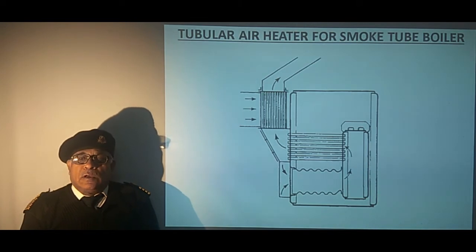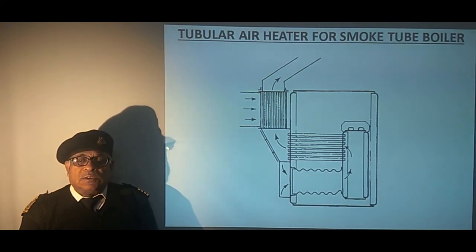This sketch shows a tubular air heater equipped on the earlier scotch boilers which was arranged vertically in the flue gas outlet. Smoke tube boilers are not used on steam ships nowadays and those equipped on the motor vessels are auxiliary boilers which do not have air heaters.